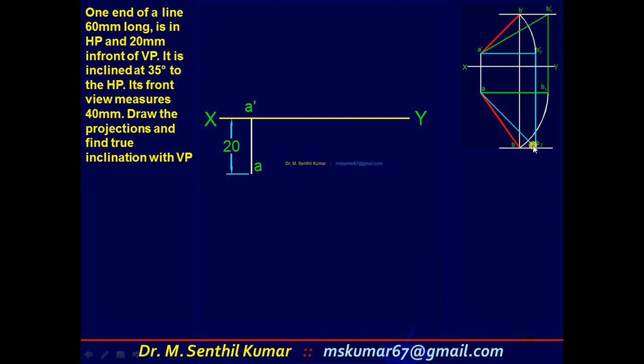Here this is the problem. The first step is draw XY reference line, then mark one end. One end is in HP, a dash is in XY line and 20mm in front, 20mm below XY. So one end is marked. In the dummy picture, if you correlate, a dash height is zero so it will be here. A distance is 20 here.